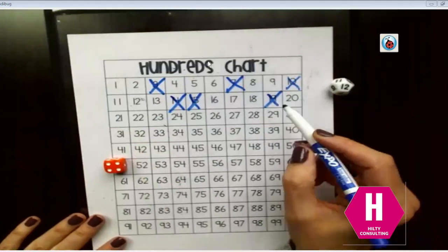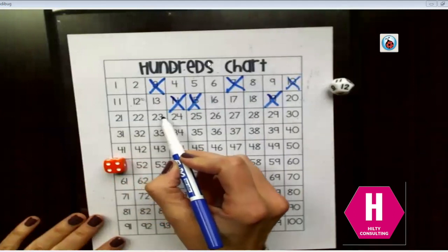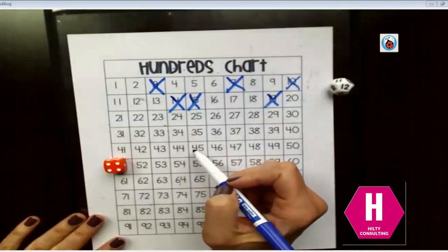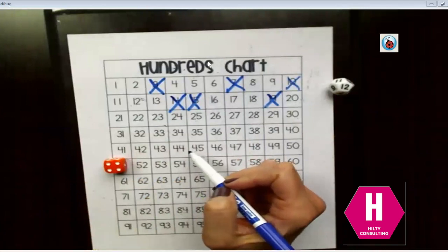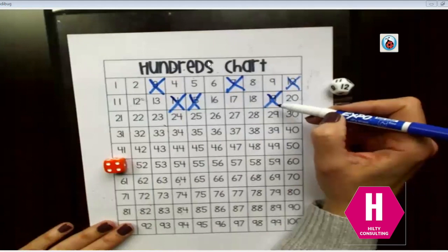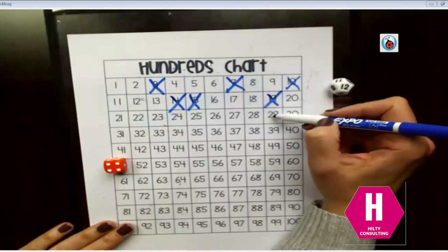Now, do I want a third through fifth grader going one, two, three, four, five, six, all the way up to 16? That's not going to be the best strategy for them. Let's add 10 and then add six more. Hopefully by third grade, they know that when you add 10, you go down one row on a hundredth chart. So there's 10 plus six more. One, two, three, four, five, six.